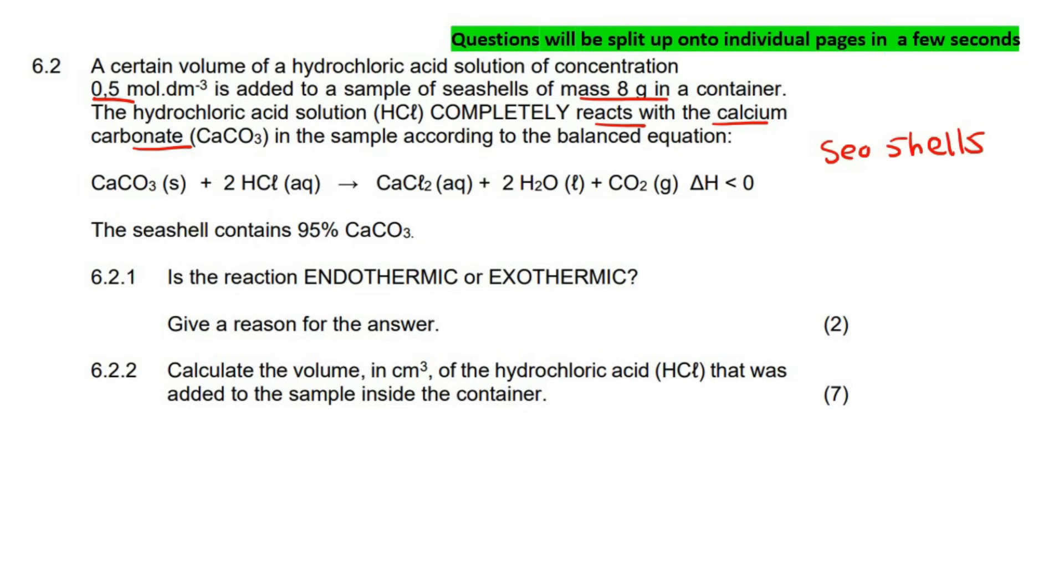Those seashells contain, so there's your seashells. The seashell contains 95%, so 95% of the seashell is CaCO3, and the other 5% is just other stuff. That is your seashell altogether. There's a big seashell, now 95% of it is calcium carbonate, 5% of it is other stuff. Now, what they're going to do is they're going to add acid onto the seashell.